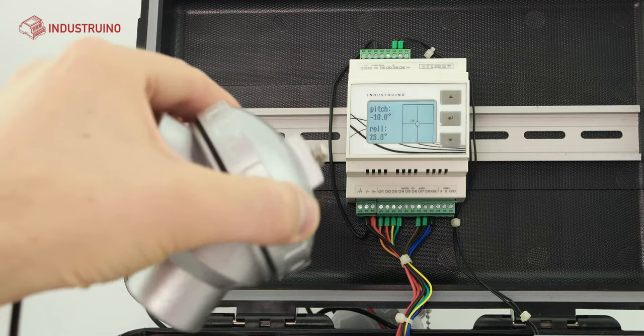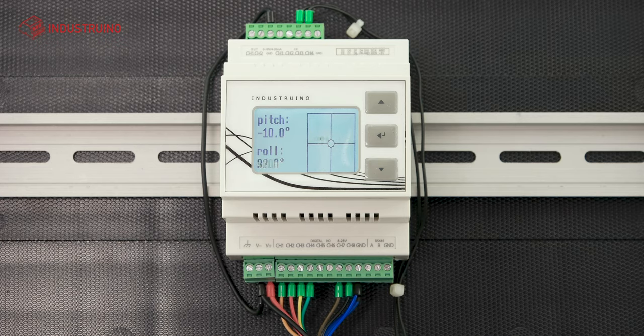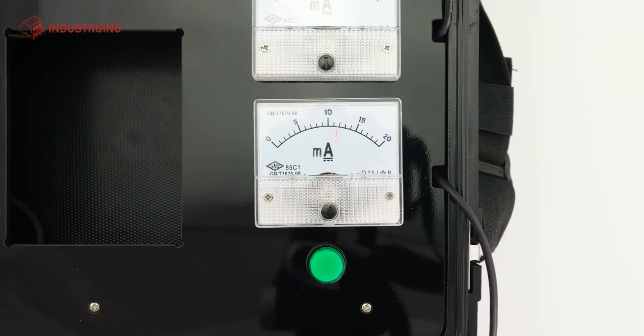The receiver, an Industrino Indio automation controller in this case, is reading the loop current, converting it back into an angle and displaying the result onto the display. An analog ammeter is also connected in series, displaying the raw milliamp value of the loop.